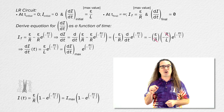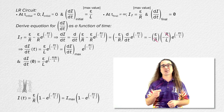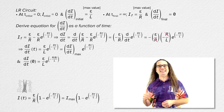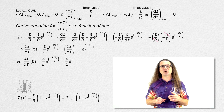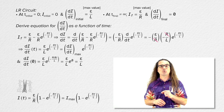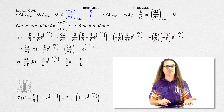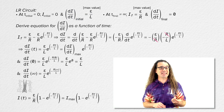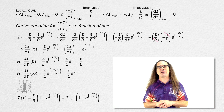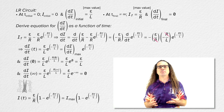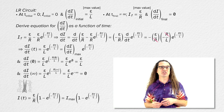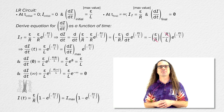Notice that this fits our limits: when we substitute zero in for time, we get e to the power zero, which gives us the initial time rate of change of current equals emf divided by inductance, which is what we derived earlier. And when we substitute infinity in for time, we get e to the power negative infinity, which is zero, meaning the time rate of change of current is zero after a long time — again, exactly what we derived earlier.